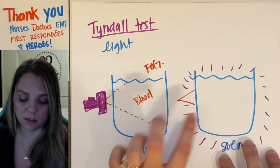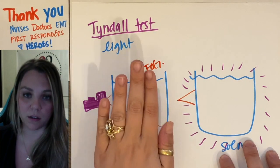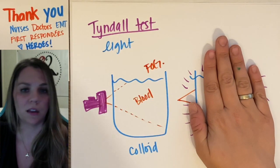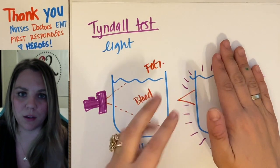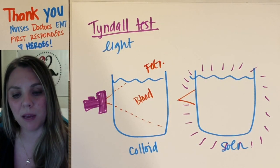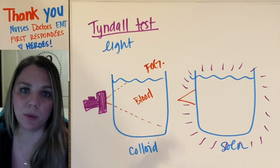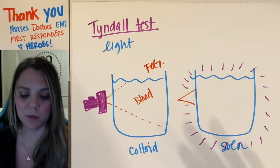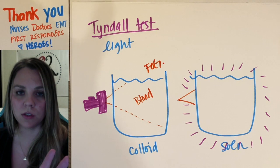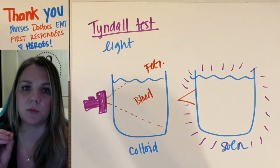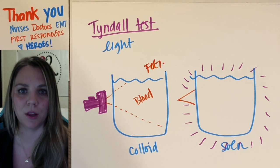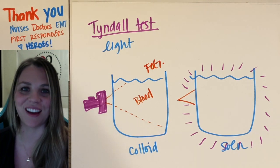So we've got colloidal dispersion — not a true solution. And then you have a suspension, which is not either one because it'll settle out. There's a really nice table on page 224 of your book that helps you break down true solutions versus colloidal dispersions versus suspensions. So if you want extra help, look there. Good luck.